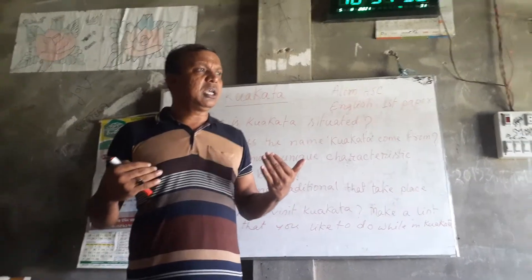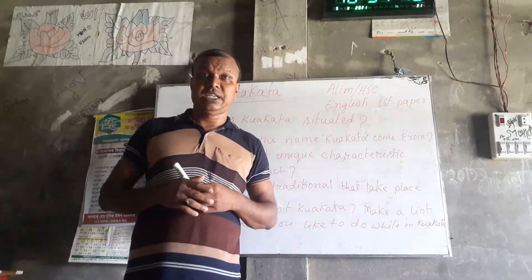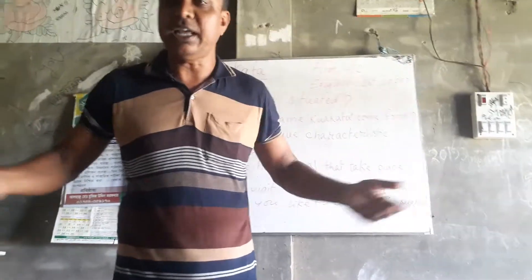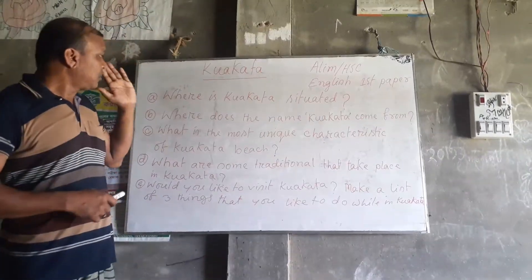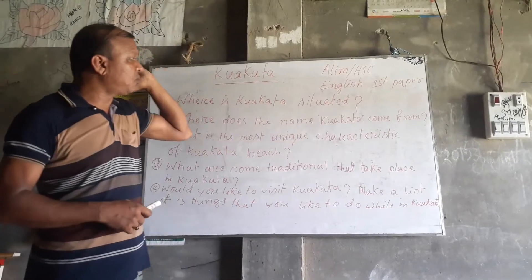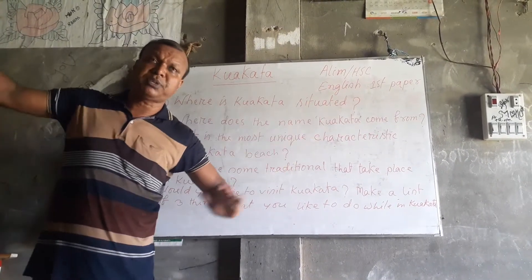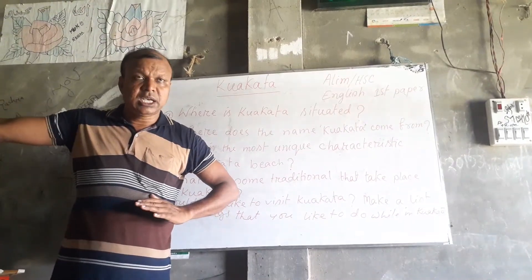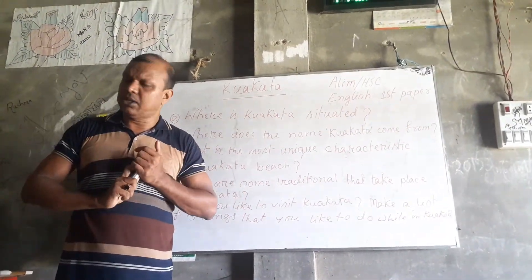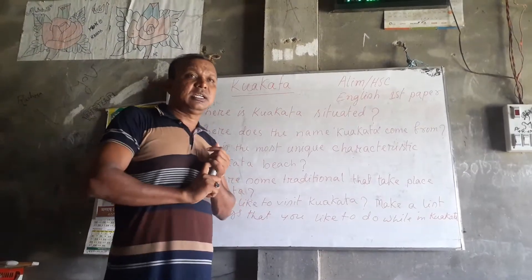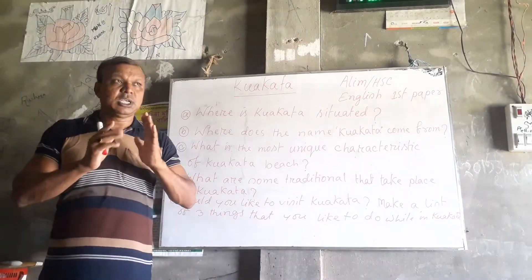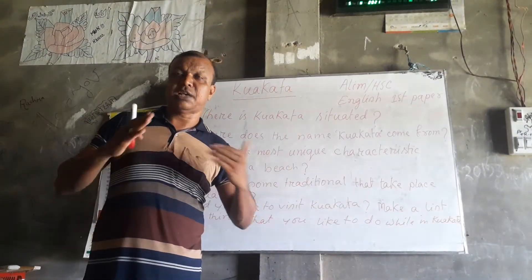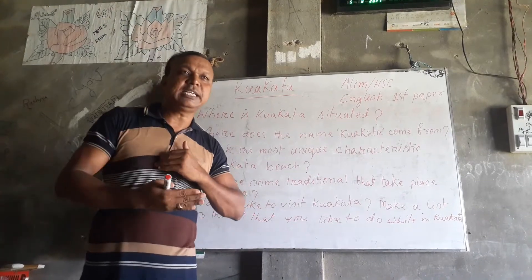It has an excellent combination of picturesque natural beauty, and its evergreen forest makes it rich with natural beauty. Kuwakata is situated at the southernmost tip of Bangladesh, under Patuakhali District, Kolapara Union and Latachapali Union, Kolapara Police Station. It is 320 kilometers from Dhaka and 70 kilometers from Patuakhali District headquarters.